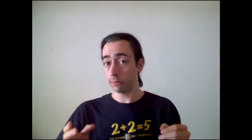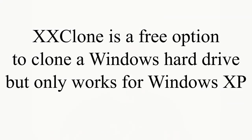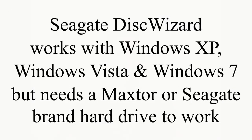For cloning backups on Windows, you have a couple of free options. The first is called XX Clone — one word, you can Google it — but it only works with Windows XP. There's also a program called Seagate Disk Wizard, which works on any version of Windows from XP onward and is also free, but it requires that at least one of your drives — either the main drive or your backup drive — be made by Seagate or Maxtor, which are actually owned by the same company. They're among the more common hard drive manufacturers, so there's a good chance you already have one. And if you buy an external drive to back up to, just make sure it's Seagate or Maxtor and you'll be fine.